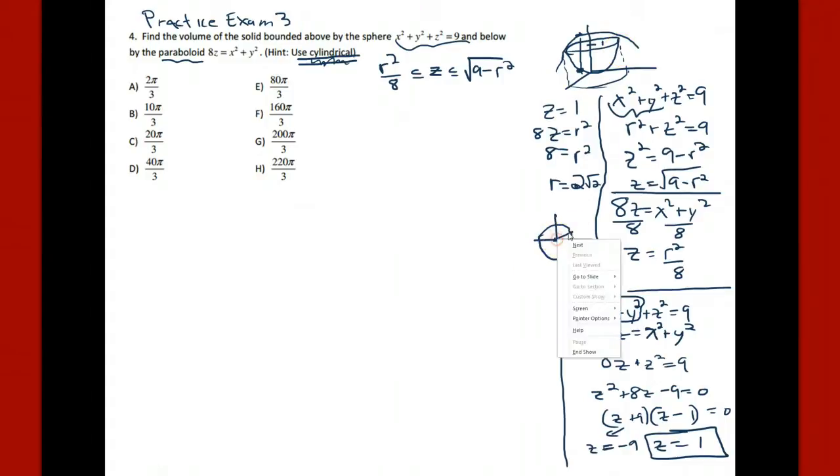And we do that in polar. So we have r's going out from 0 to the curve. To the curve, so the bounds on r are 0 to 2 root 2. And the bounds on theta, of course, are the familiar 0 to 2 pi. And there we have it.